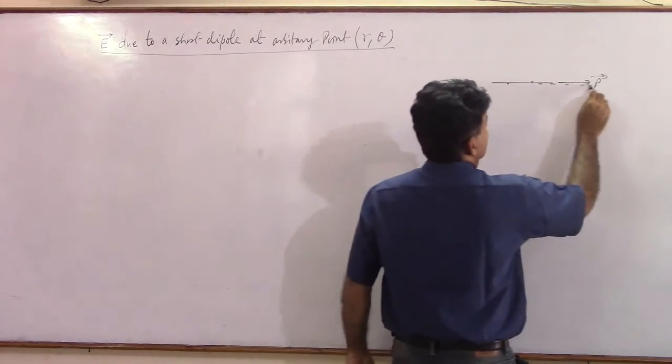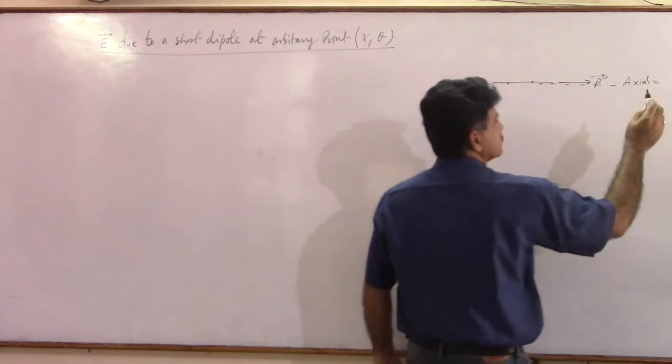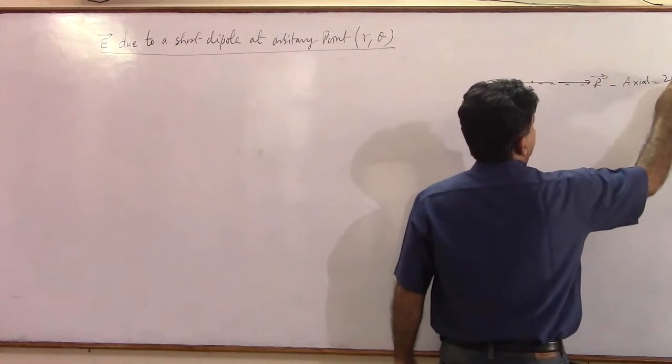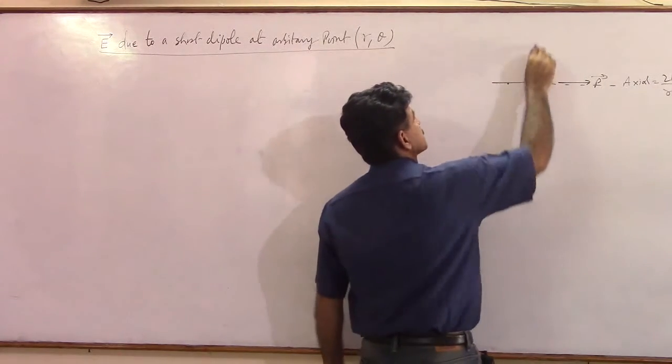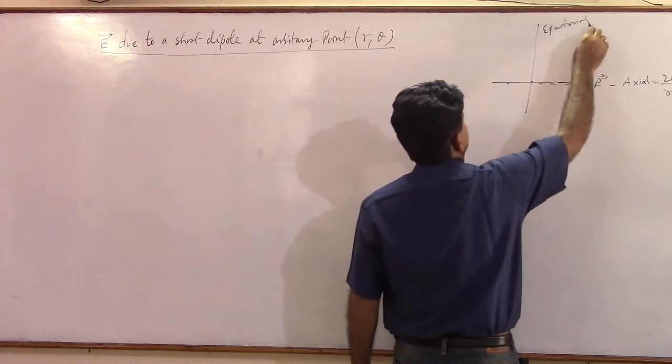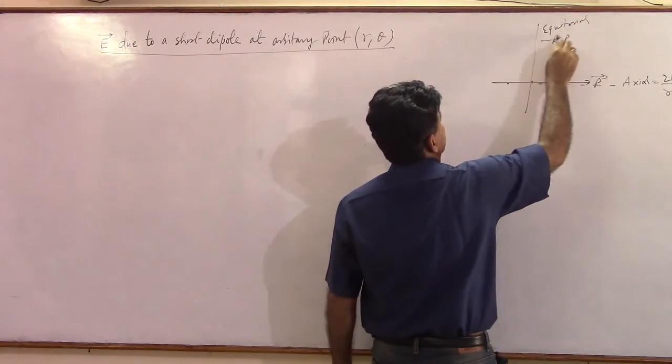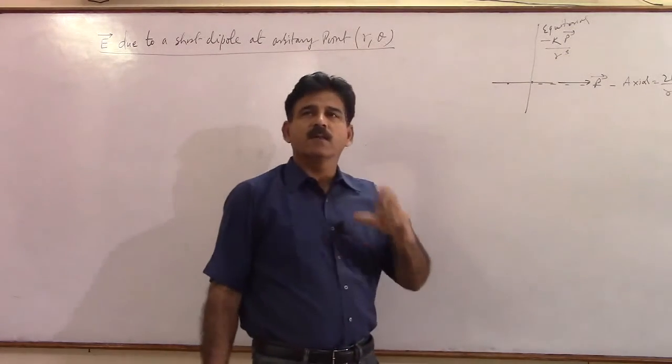On this line you call it axial. Short dipole, what result you get? You say we get 2KP by R cubed. And what do you get for this line, that is your equatorial line or broadside on? What result you get here? You get minus KP by R cubed.